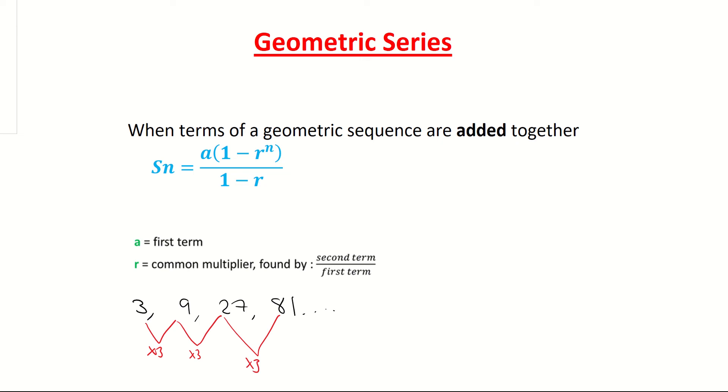What we're now going to look at is what's known as a geometric series, and a series is when the terms of the geometric sequence are added together. So basically what we're going to look at is something like what's the sum of 3 plus 9 plus 27 plus 81 and so on. So that's what we're going to take a look at and we're going to have a look at an example now.